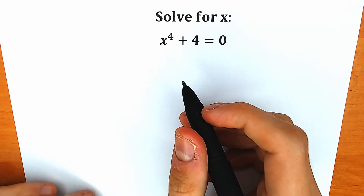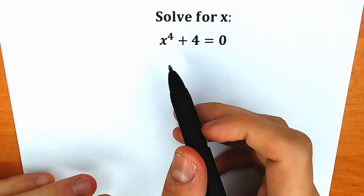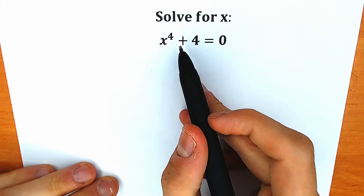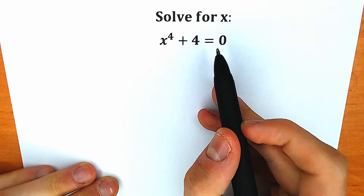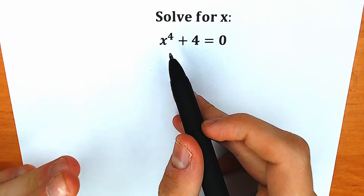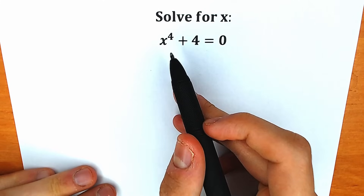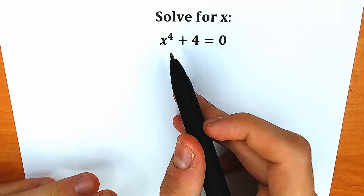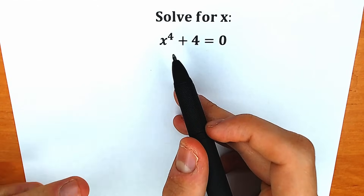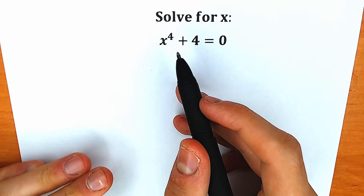Hello everyone! Welcome back to my channel Hiya Mathematics! Today we have a very interesting equation: x to the fourth power plus 4 equals zero, and we need to find x. If you have your solution, you can write it down in the comment section, and in a few minutes we will check your answer. So right now let's try to solve.